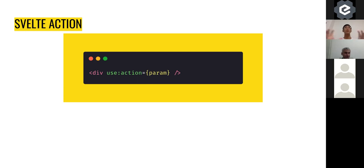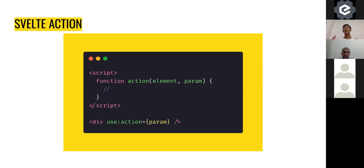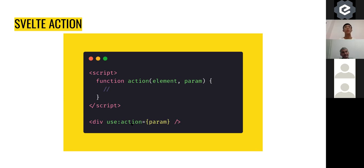The action function has a contract with Svelte: it takes two parameters — element and params. When a div using this action is mounted to the screen, Svelte calls this function passing the mounted DOM element and whatever params you specified. You can have multiple divs using the same action with different params, and the function will be called multiple times with different elements and different parameters.